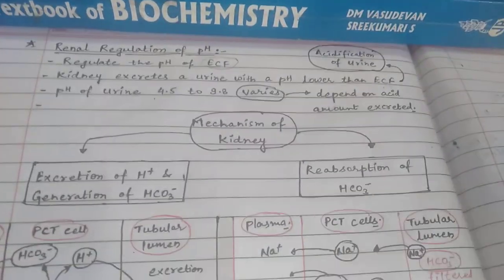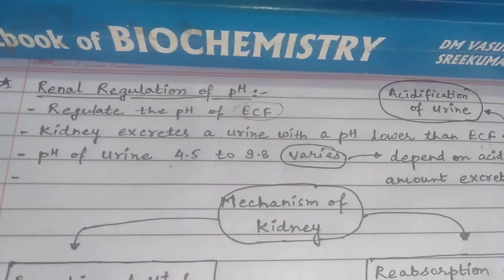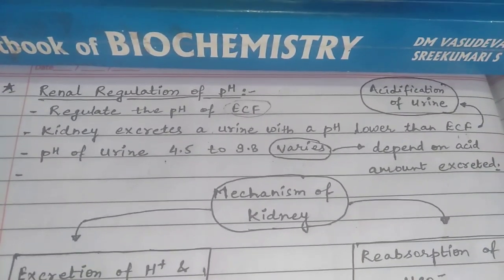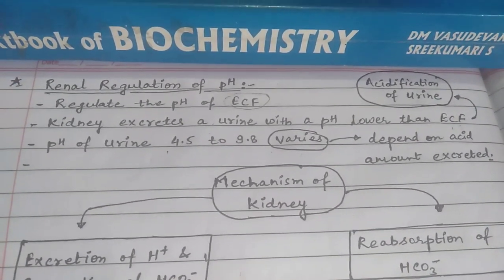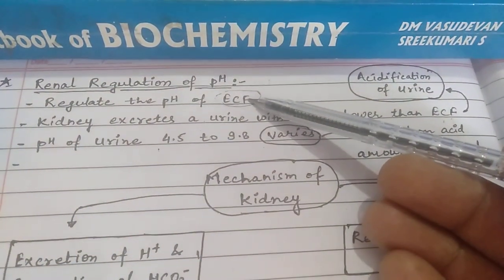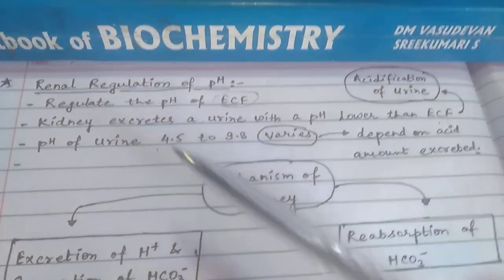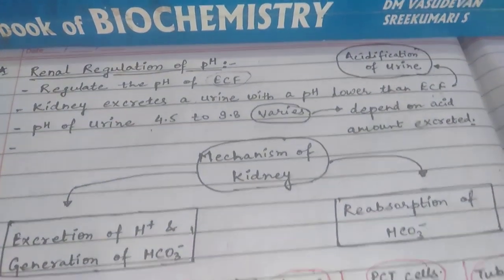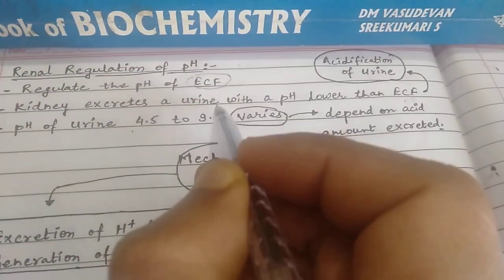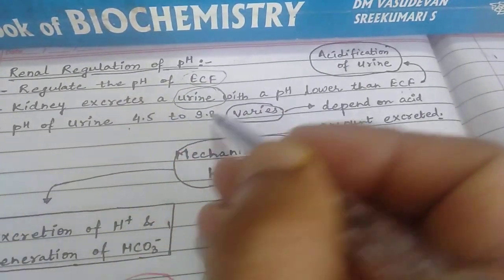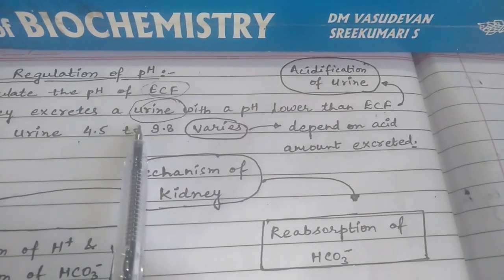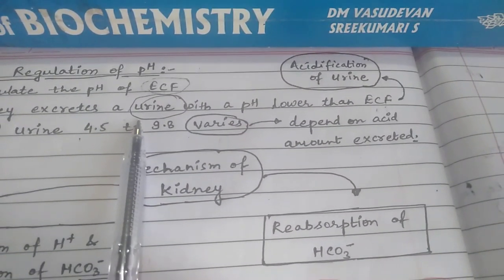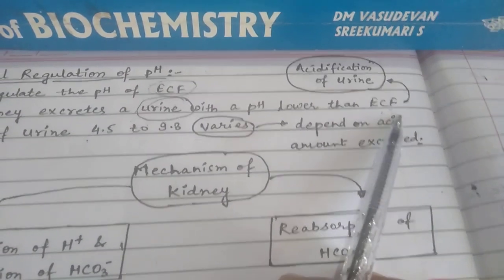In this video we will discuss the renal regulation of pH. Renal regulation is the third mechanism against changes in pH, and the kidney mostly regulates the pH of the extracellular fluid. Whenever the kidney excretes urine, this urine pH is always lower than the extracellular fluid.